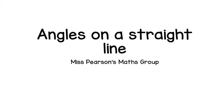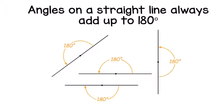Hi Year 5, this week in my maths group you're going to be looking at angles on a straight line. This is really straightforward - all you really need to know is that angles on a straight line always add up to 180 degrees.